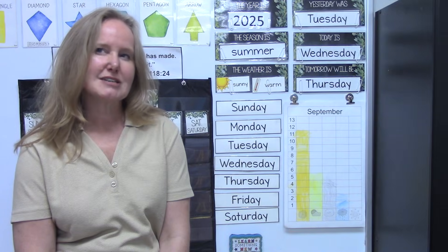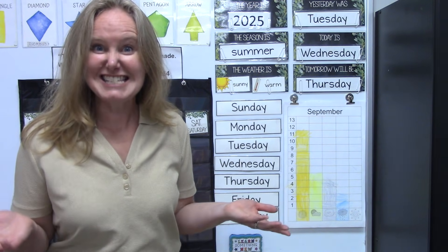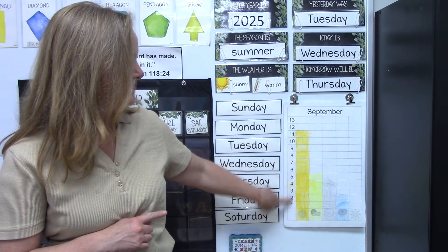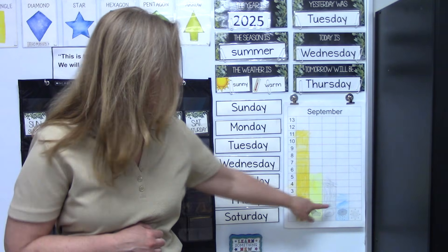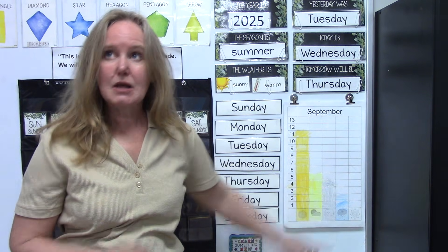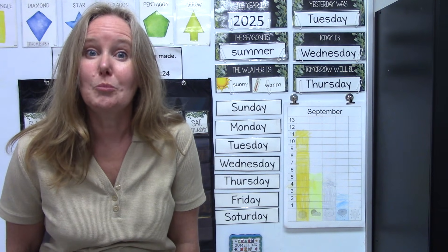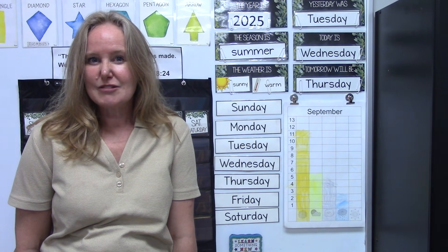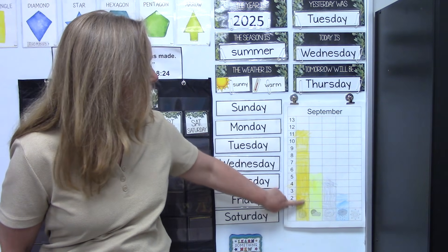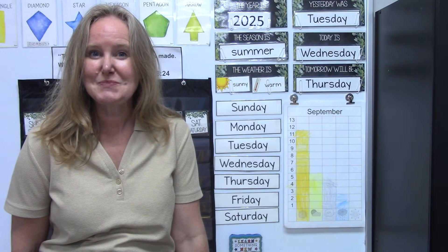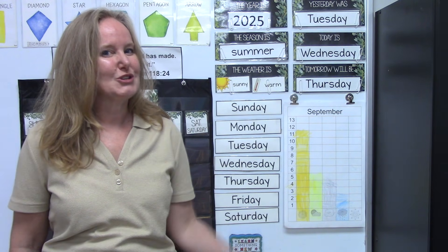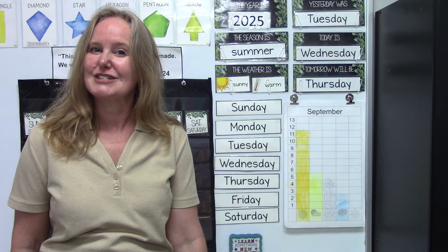Today we're going to be writing observations from a graph. An observation is really just a fact that we can find out by looking at the graph — like how many sunny days were there? I see that it's 11. Or how many rainy days were there in September? We had two. We could even think about how many more sunny days there were than rainy days, or if we totalled up all of the blocks we colored in, we could figure out how many days we made observations.